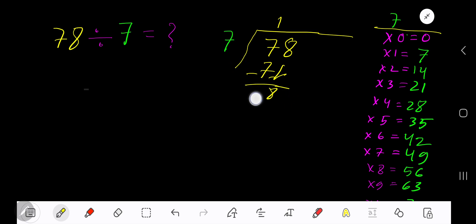7 goes into 8 how many times? 2 times 7 is 14, which is greater, so 1 time. 1 times 7 is 7. Subtract: 1. So our answer is 11 remainder 1.